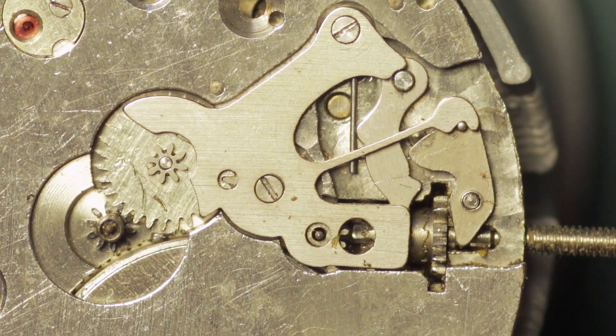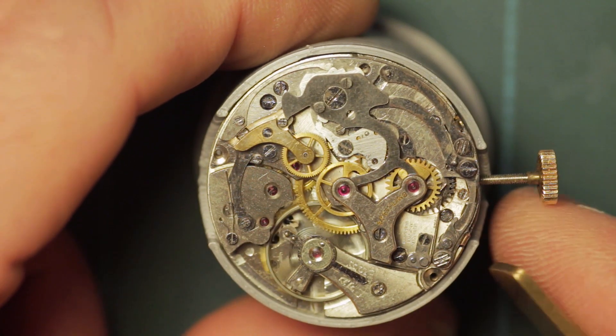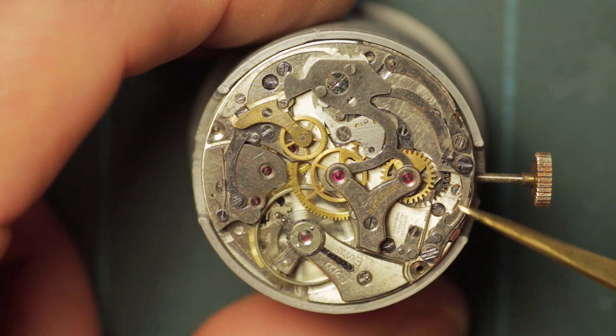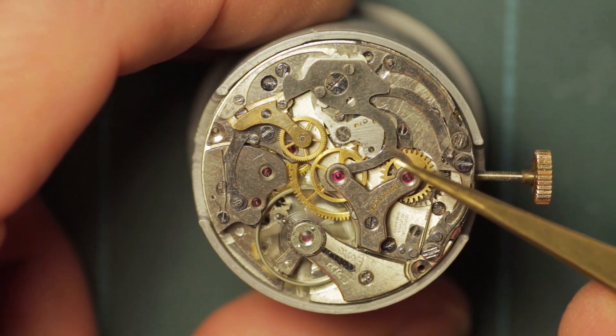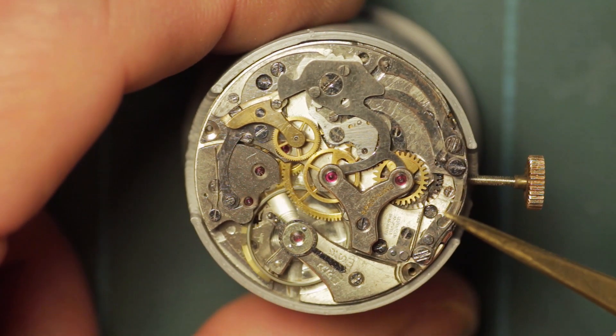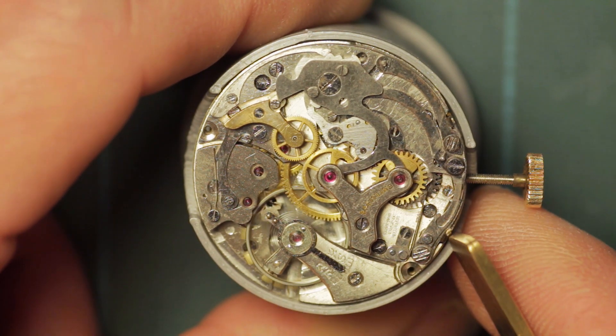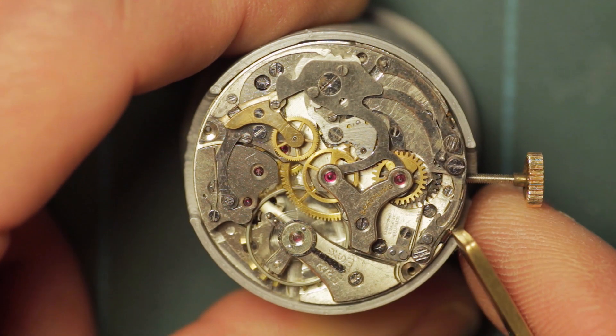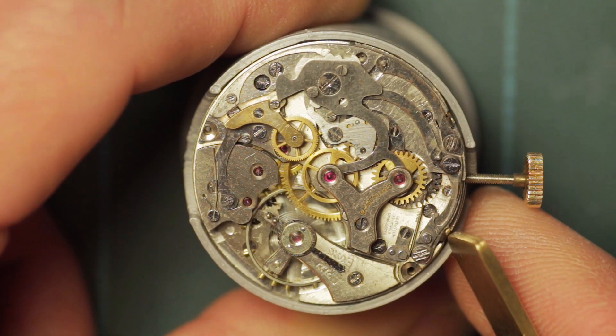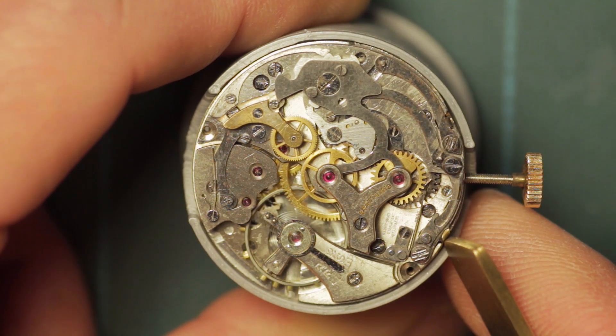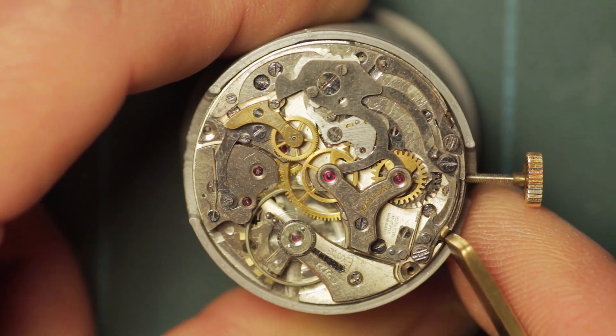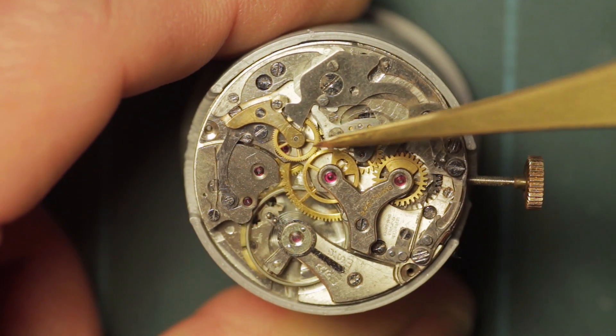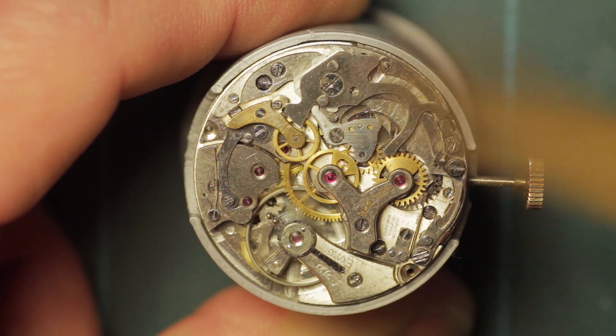One more little thing before I do start with the disassembly is you can see if you look at the chronograph works here that this is very much the same kind of principle as the Landeron that you'll have seen in my previous video, if you've watched that, the 48. It has - it's a cam lever chronograph rather than column wheel. The main difference being that the start/stop is operated by the top button, which has a two-part lever rather than a one-piece one like the Landeron.